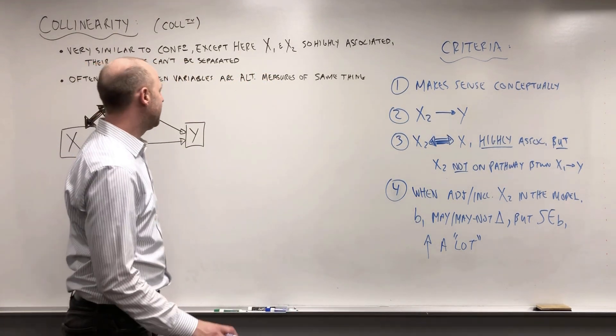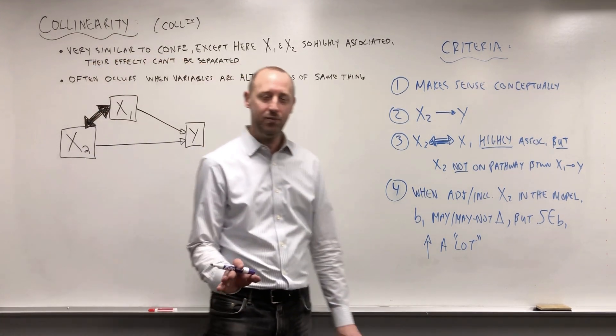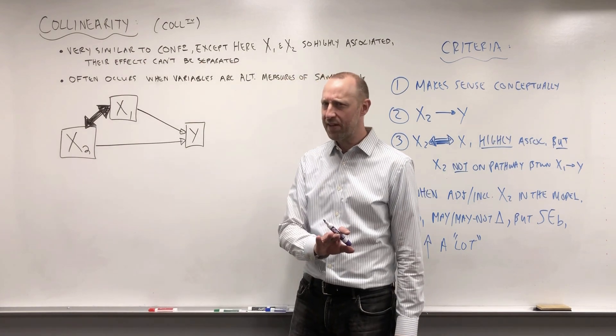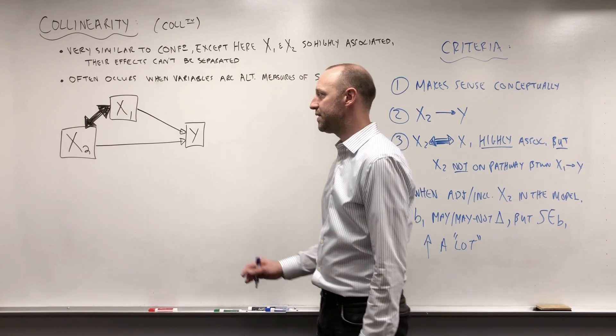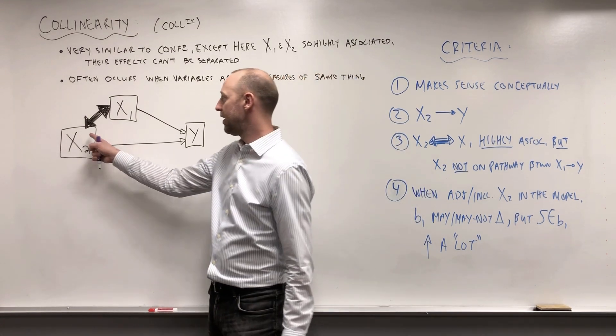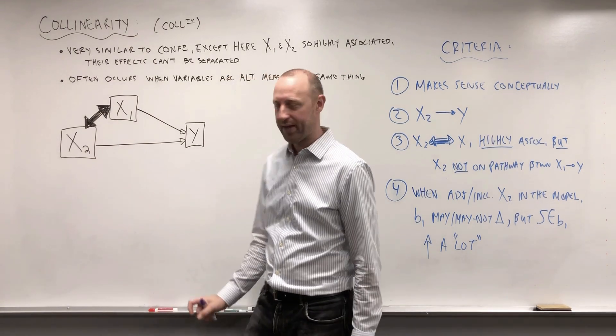The idea of collinearity is a problem whether we're looking at effect size models or predictive models. In an effect size model it's the biggest problem if X1 and X2 are so highly associated we can't separate them.